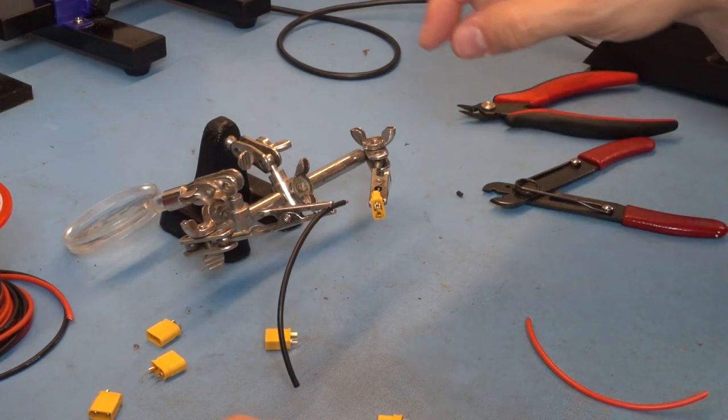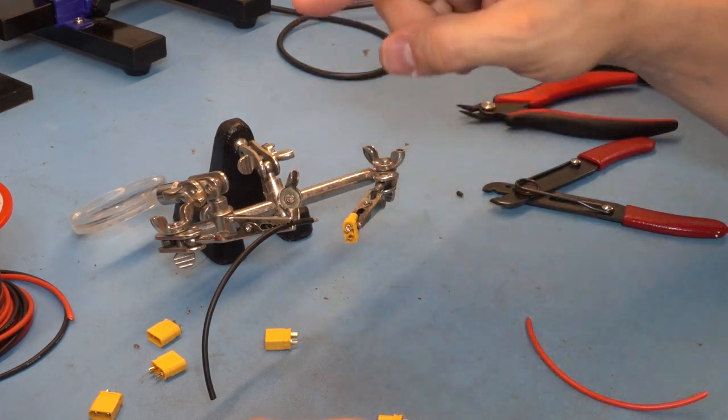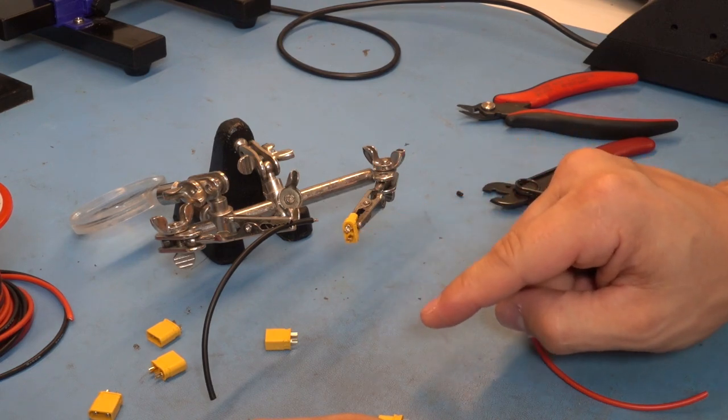That's the critical part: get the solder all the way through the strands of the wire, for which the flux helps, and get the solder coating the solder cup on the connector.